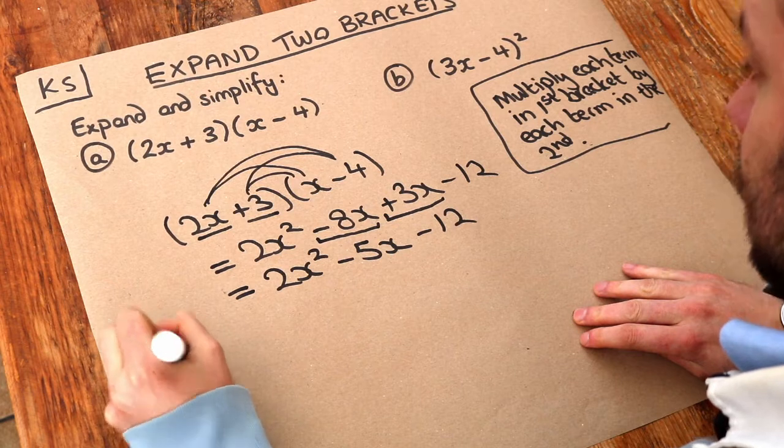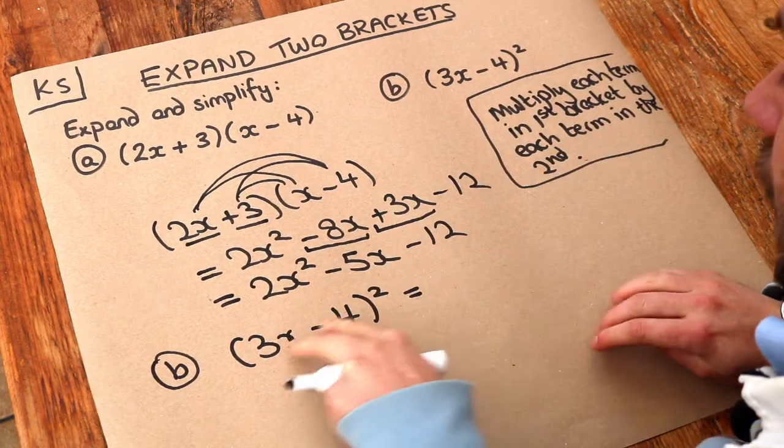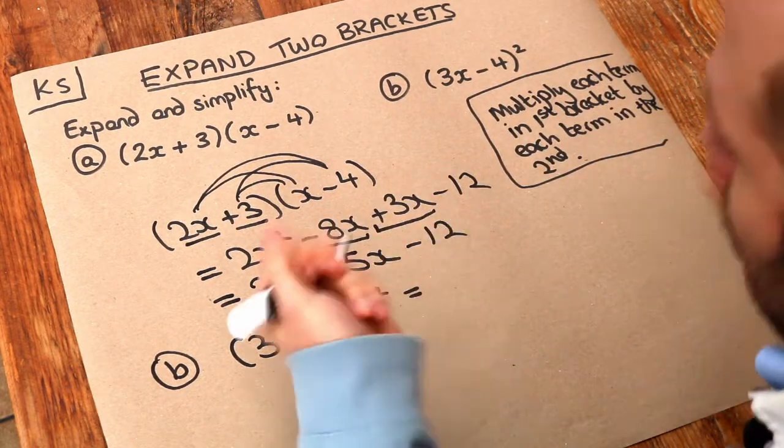What about the second one? When we've got 3x minus 4 squared, well anything squared just means this thing times itself. If I had to say 5 squared, that would mean 5 times 5.